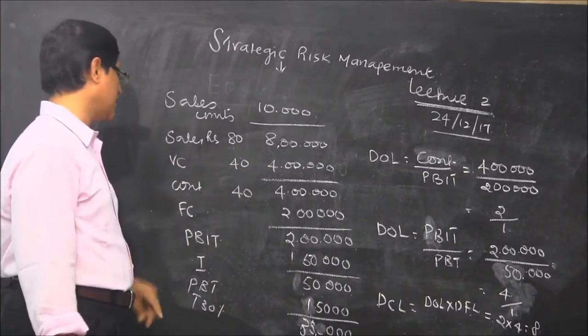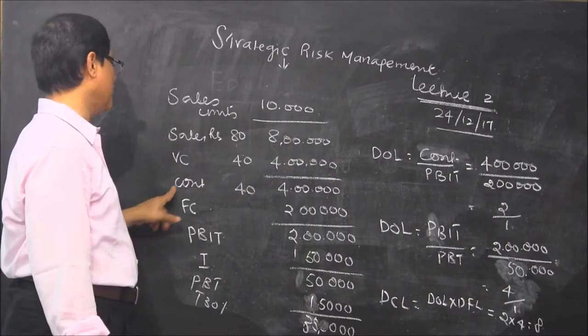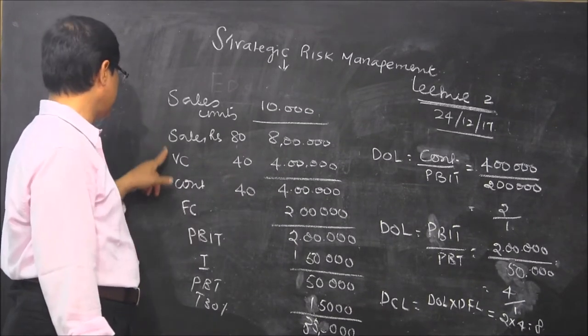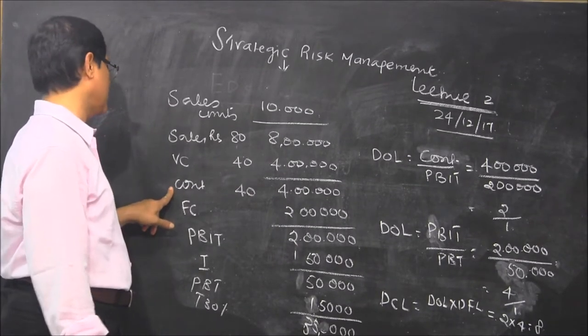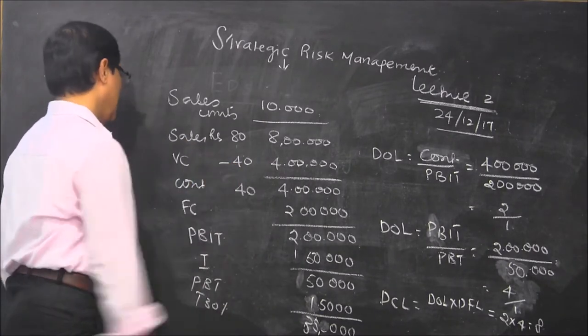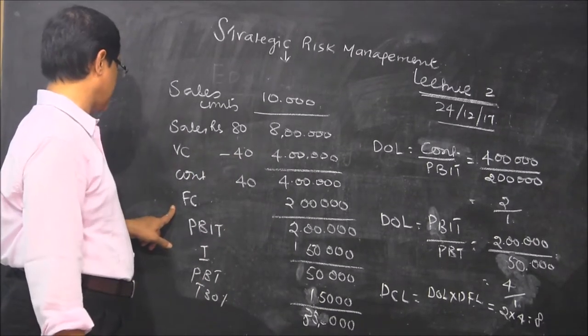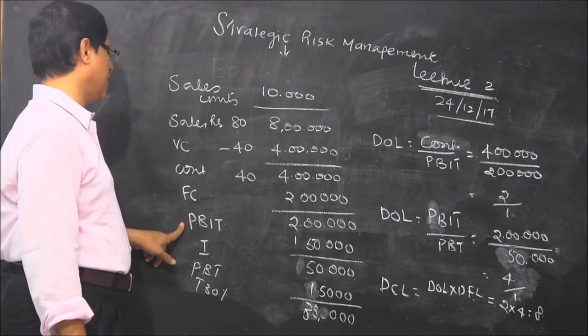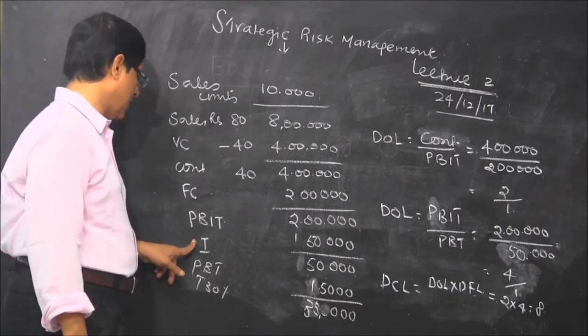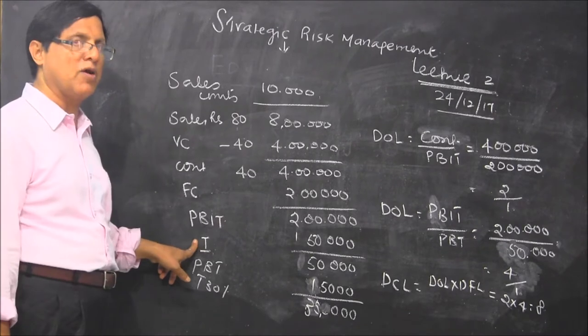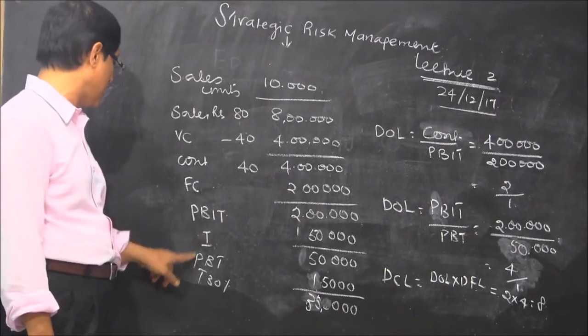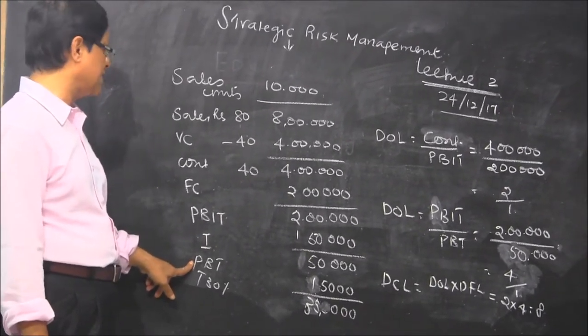Variable cost 4 lakhs, contribution is 40 rupees, 4 lakhs. Sales minus variable cost is contribution, and fixed cost is 2 lakhs. Profit before interest and tax is 2 lakhs, and interest on the borrowings is 1,50,000, and profit before tax is given.